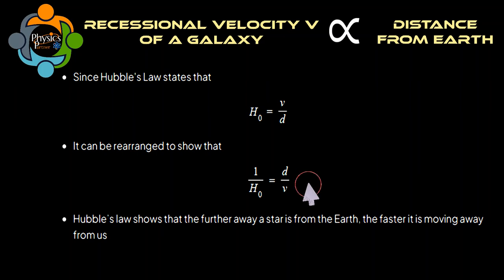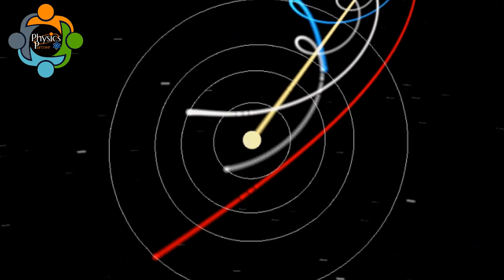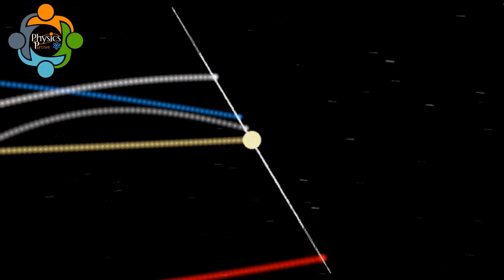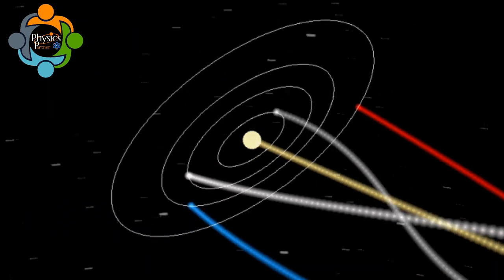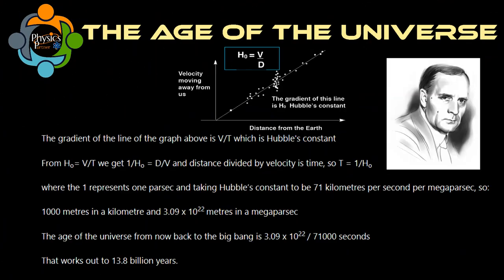A key aspect of Hubble's Law is that the furthest galaxies appear to move away the fastest. The gradient of the graph can be used to find the age of the universe. When the distance equals zero, this represents all the matter in the universe being at a single point. This is the singularity that occurred at the moment of the Big Bang. The units of the gradient are per second, the same as the unit of the Hubble constant.